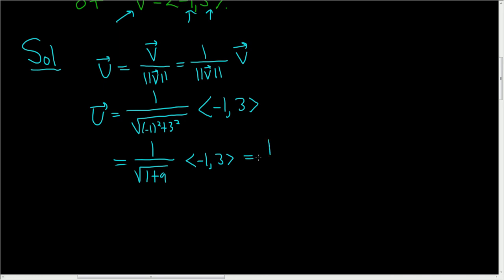This is equal to 1 over the square root of 10 times negative 1 comma 3. Now we can actually perform the multiplication. This type of multiplication is called scalar multiplication.